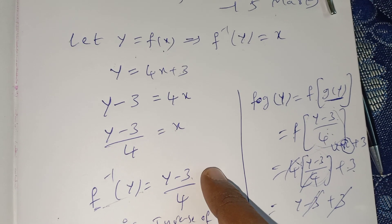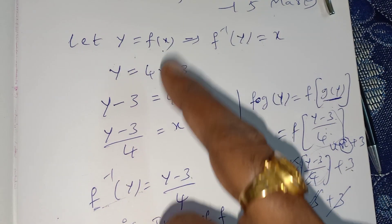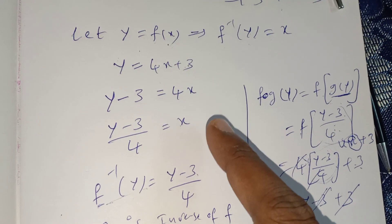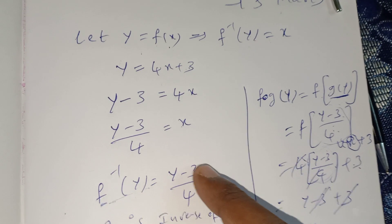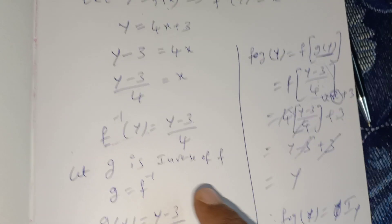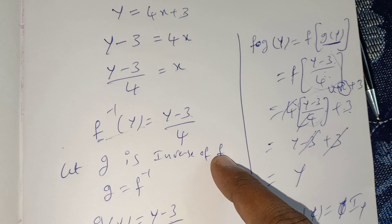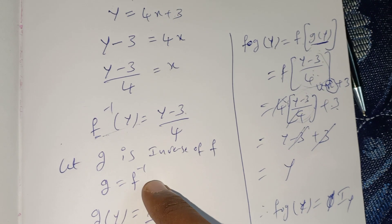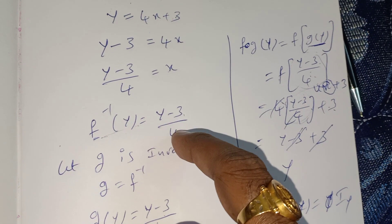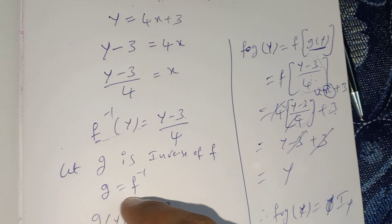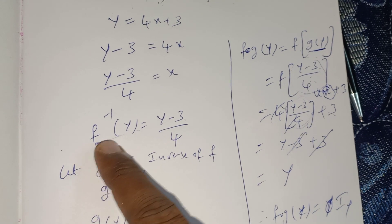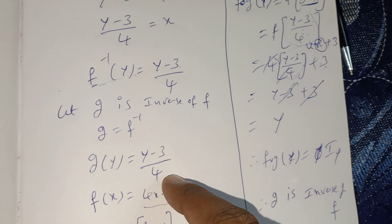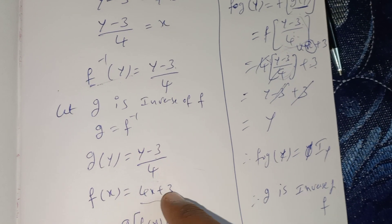If the question asks to find the inverse of f, you use this procedure for any problem. Some questions only ask to find f⁻¹(y), so you don't need to write additional steps. After this step, let g be the inverse of f. Then g = f⁻¹. We wrote f⁻¹(y) = (y - 3)/4, so in place of f⁻¹, write g: g(y) = (y - 3)/4. Given f(x) = 4x + 3.